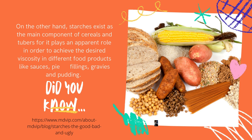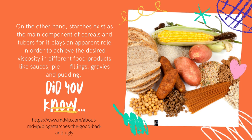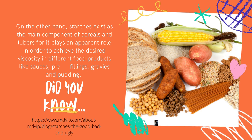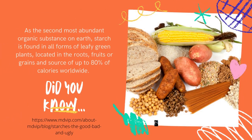On the other hand, starches exist as the main component of cereals and tubers, and they play an important role in achieving the desired viscosity in different food products like sauces, pie fillings, gravies, and pudding.